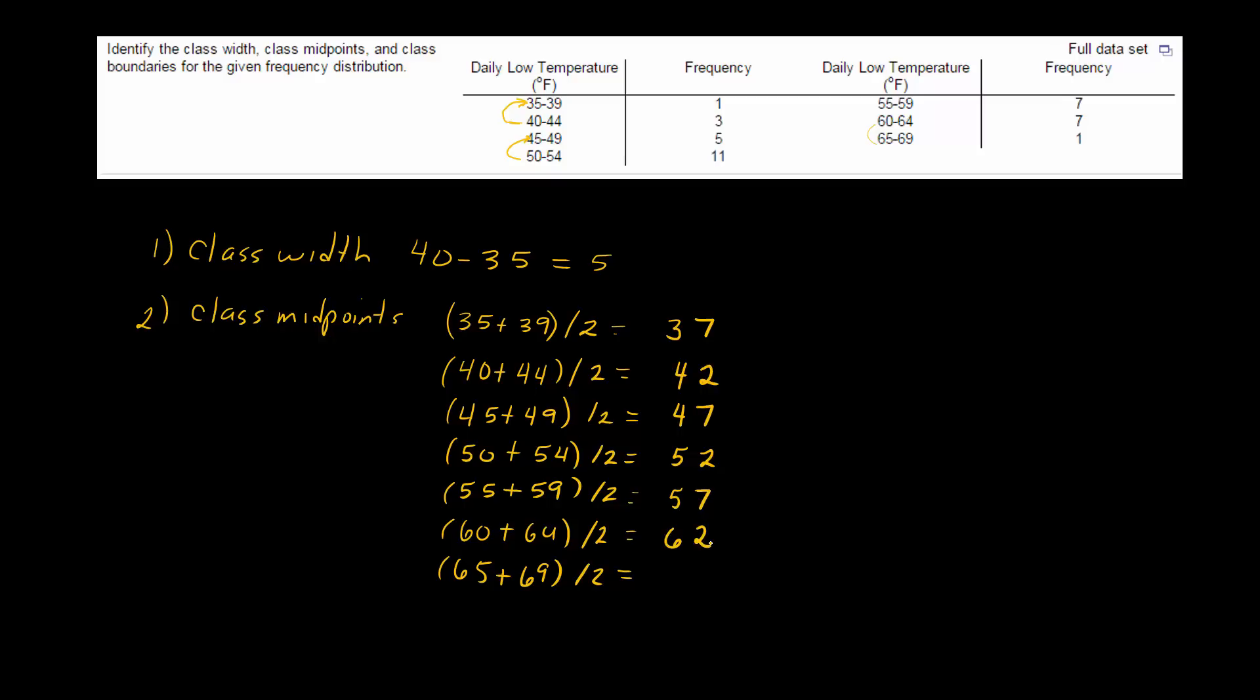Well, if you kind of look at this, you can see each one of these, if I looked at this lower value, I'm just adding two points to it, right? 42, 47, 52, 57. And so that's just a quick way of doing it.